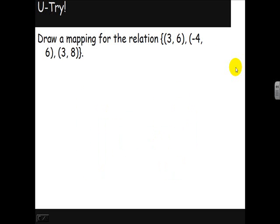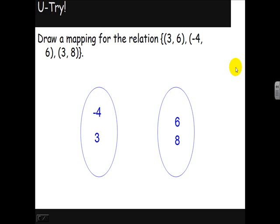Try another mapping diagram. Okay, my domain: just 3 and -4. My range: 6 and 8. -4 maps to 6, and 3 maps to 6 and 8.